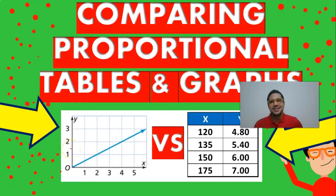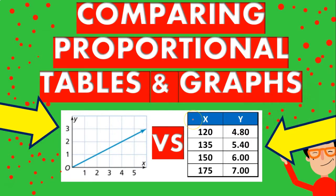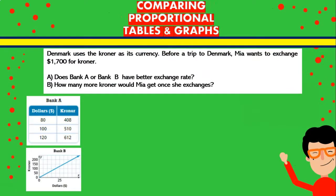Hello guys, welcome back. In today's video we're going to be taking a look at how to compare proportional tables and graphs and why it's useful. We're going to be taking a look at a real-life situation. Denmark uses the kroner as its currency. Before a trip to Denmark, Mia wants to exchange $1,700 for kroner. Does Bank A or Bank B have the better exchange rate, and how many more kroner would Mia get once she exchanges?